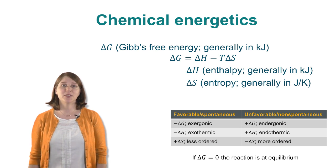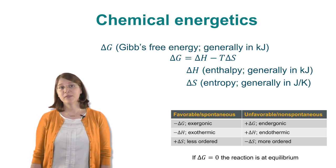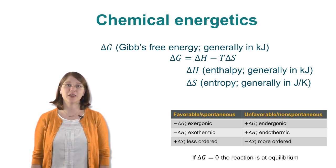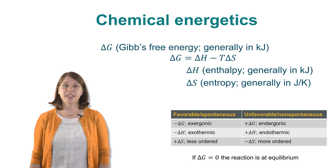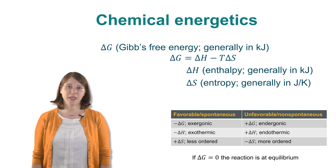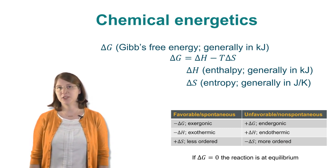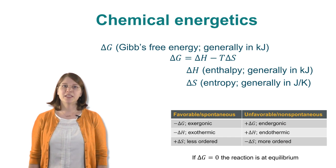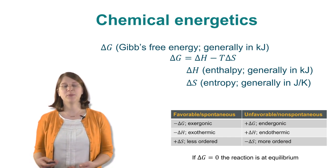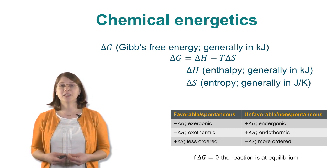To do this, we need to use the thermodynamic equation that the free energy, delta G, or the change in free energy, is equal to the change in enthalpy, delta H, minus the temperature in Kelvin times the change in entropy, delta S. We usually measure enthalpy in kilojoules and entropy in joules per Kelvin. We have an enthalpic contribution and an entropic contribution to free energy, which will decide whether or not a reaction is going to proceed.